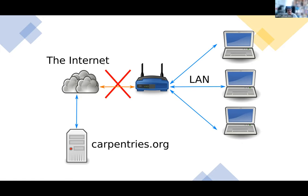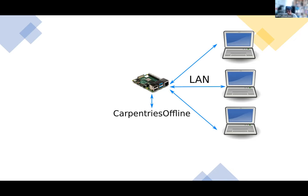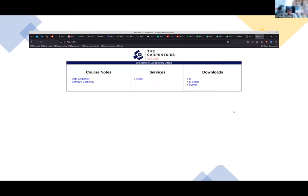If the WAN — the Wide Area Network, the internet side — breaks for any reason, you are cut off. You could use your phone data, but that can be expensive. What we do now is replace the access point with the Raspberry Pi. On the Pi's SD card is a website with all the learning materials and downloads. Your learners connect to it — they'll see it as 'Carpentries Offline' in their list of access points — and navigate to the Carpentries Offline homepage.